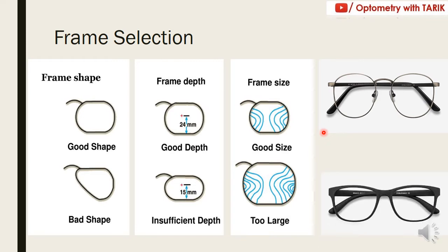It is always advisable to go for a metal frame rather than a plastic frame. A metal frame is more adjustable compared to plastic because it has nose pads which can be raised or lowered to increase or decrease the depth of the frame. You can also easily give a pantoscopic tilt to the frame. In plastic frames, as they use a saddle bridge, you cannot increase or decrease the bridge height, making adjustment quite difficult.